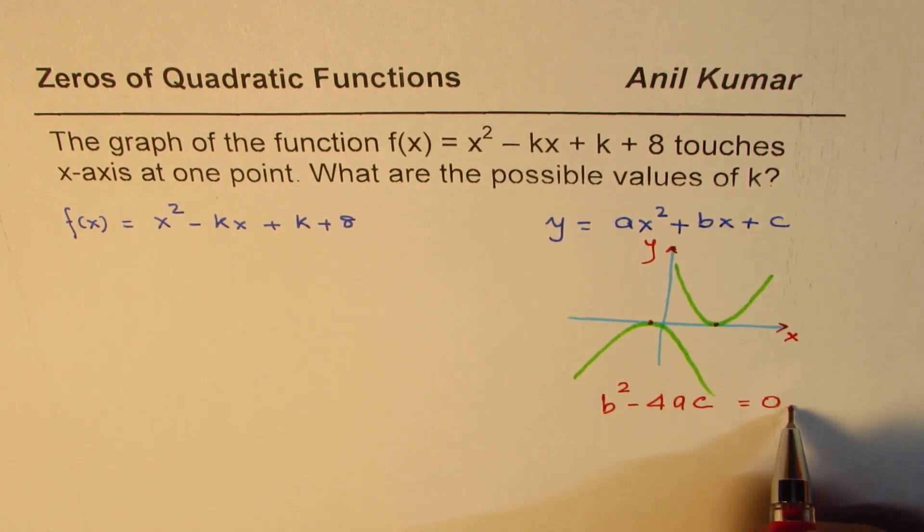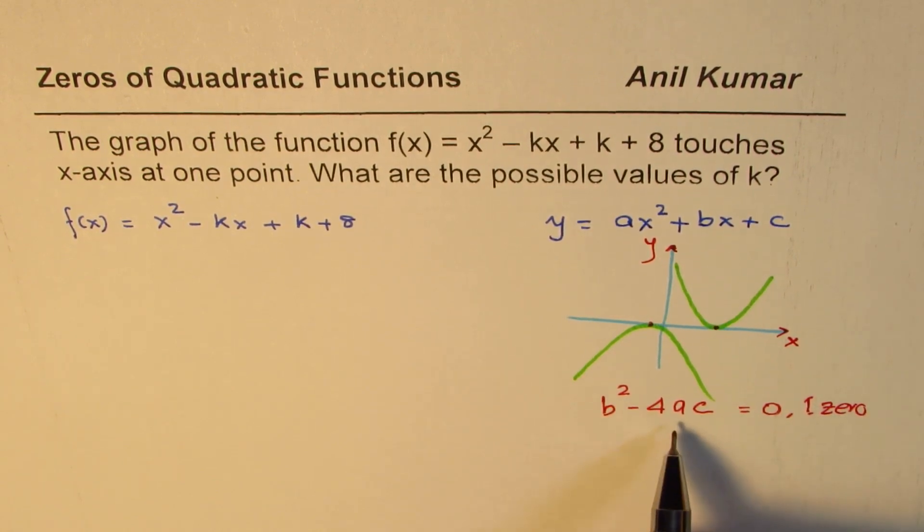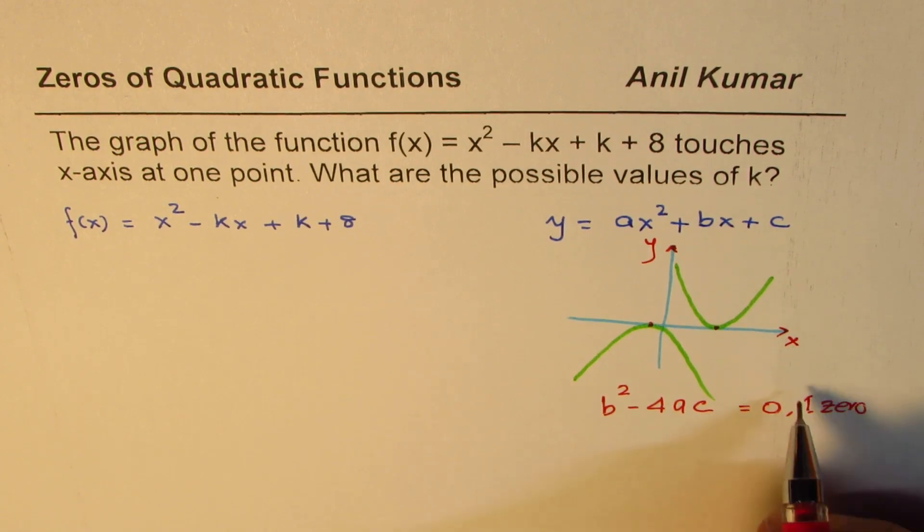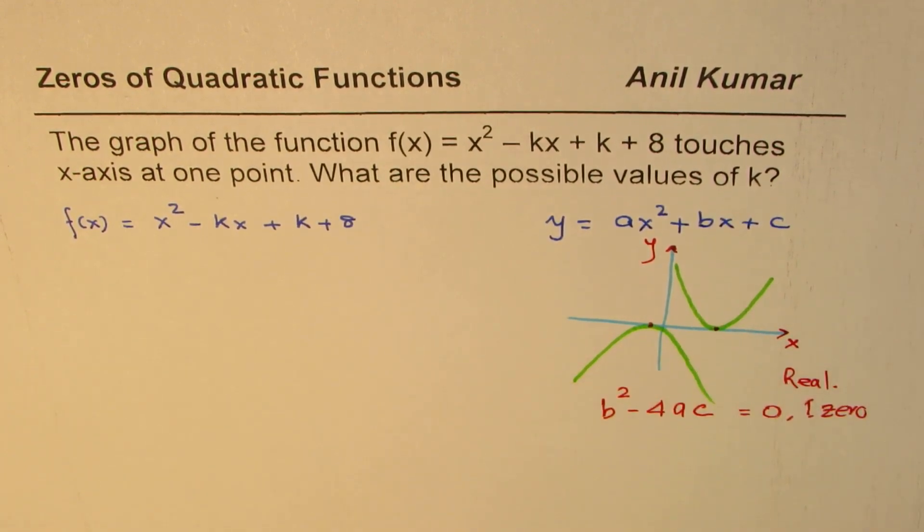Now the condition for it to have just one root is that b squared minus 4ac should be equal to 0. So that is the condition, with one root or one zero. And if this is positive, in that case we have two zeros, and if this is negative, then we have no zeros at all. We are talking about real zeros, or these x-intercepts.